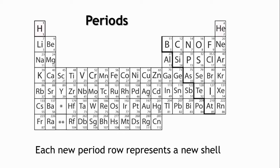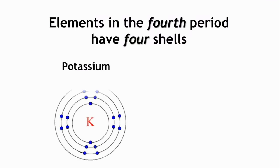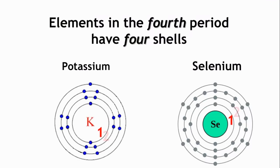Elements in the first period have one shell, and as we go down, the shells increase. Hydrogen is in the first period. It has one shell. Potassium is in the fourth period and has four energy shells, as do all the other elements in this period.